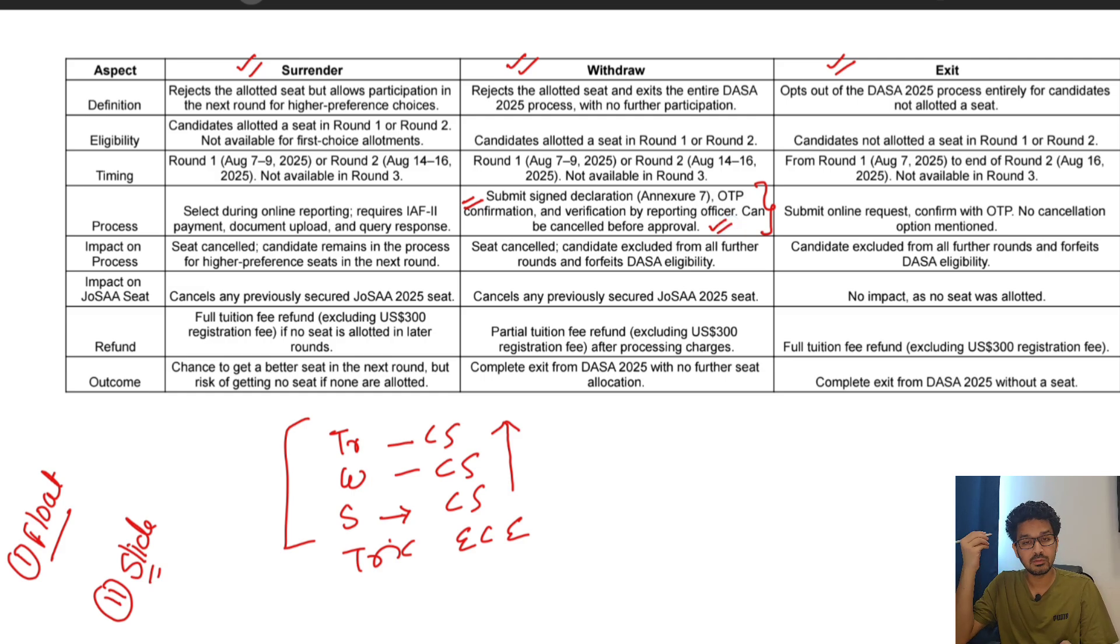Even if you've gone for the withdrawal option, if it's not yet approved you still have time to think. But once you've submitted and gotten the OTP, most probably you want to withdraw. You will choose the withdraw option if you are allotted a seat - then you will not find the exit option, you will see the withdrawal option. You have to select withdrawal, submit Annexure 7, and you will not be able to participate in further rounds. For the refund process, partial tuition fees will be refunded depending on the officer.